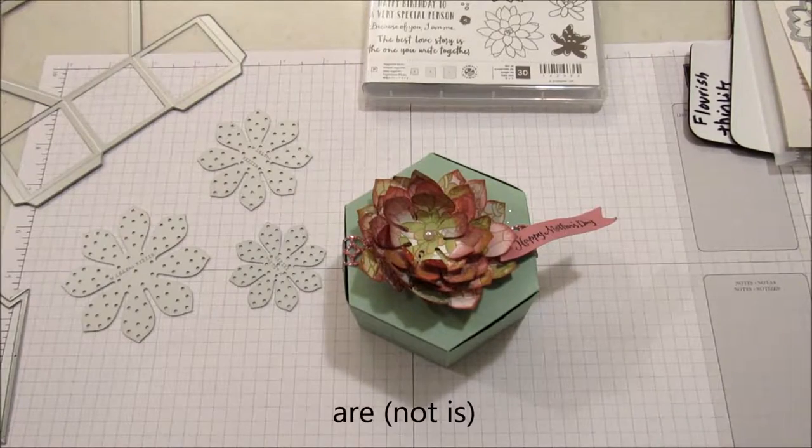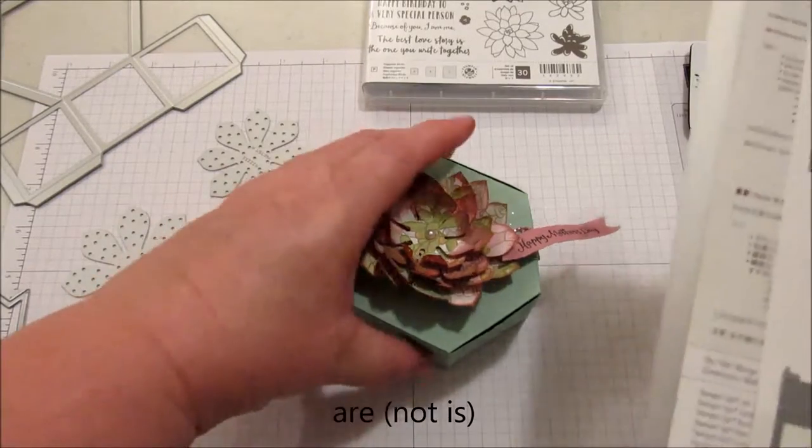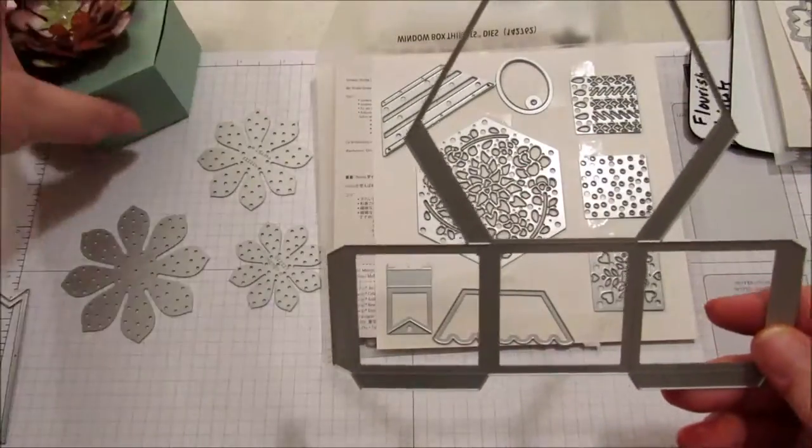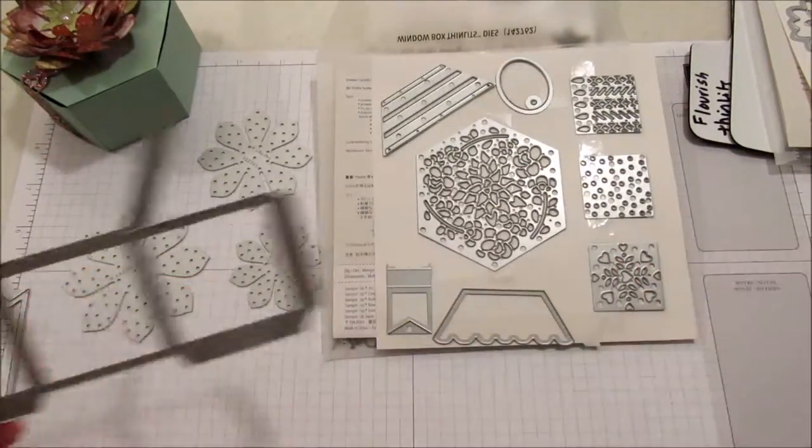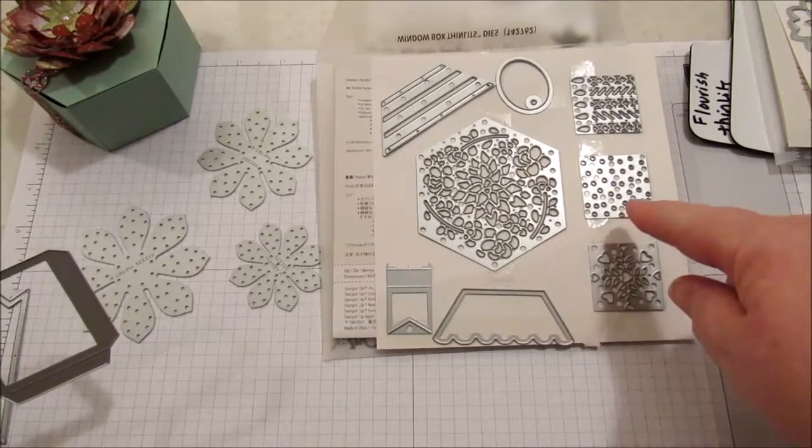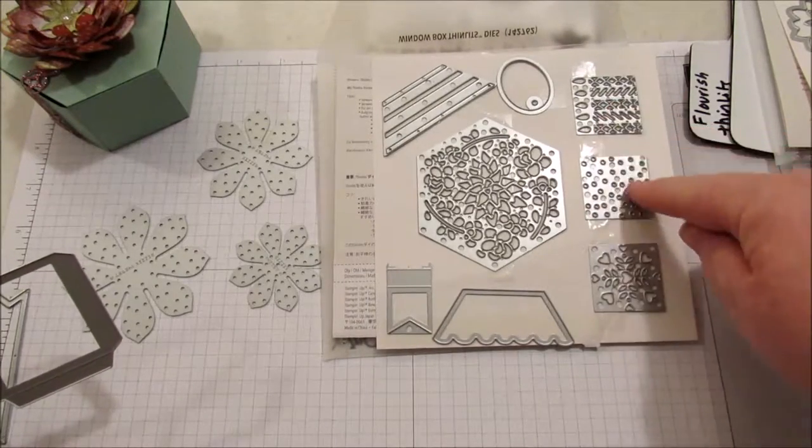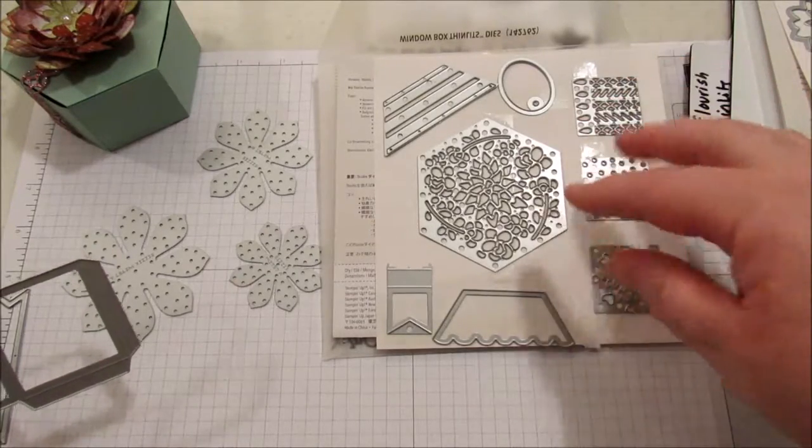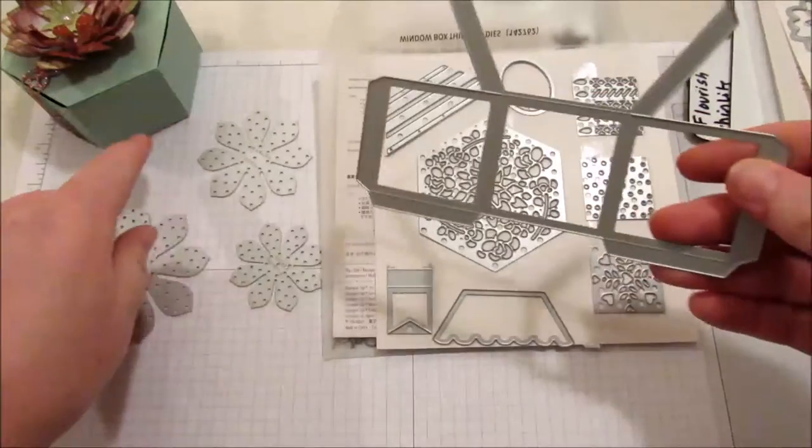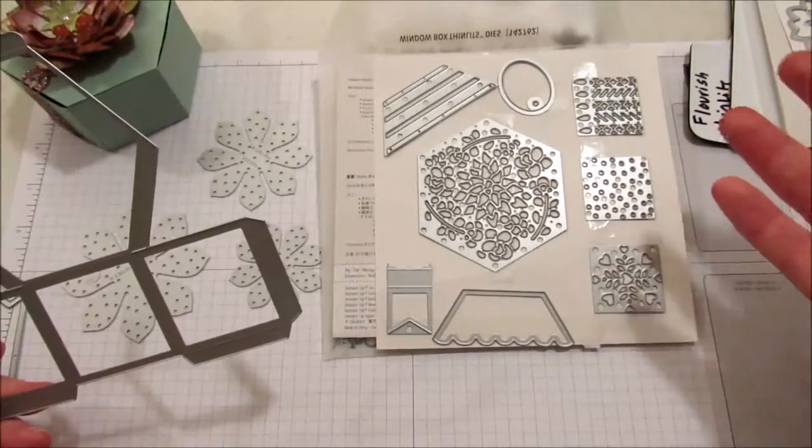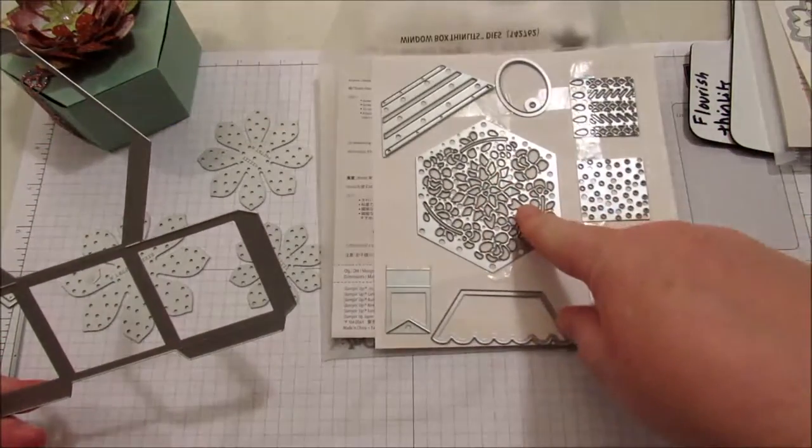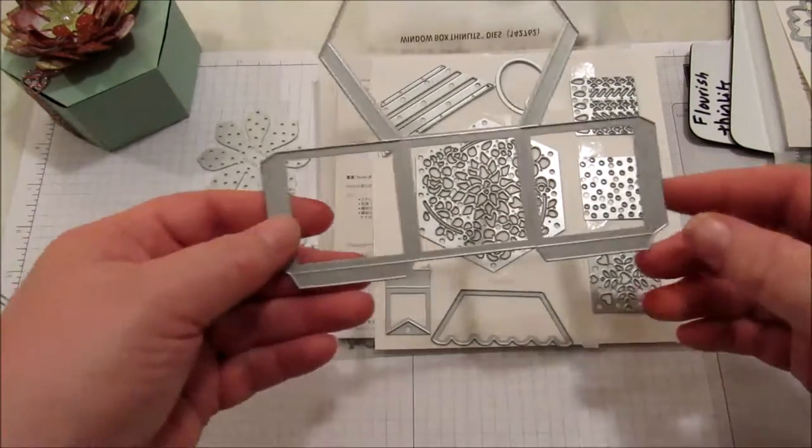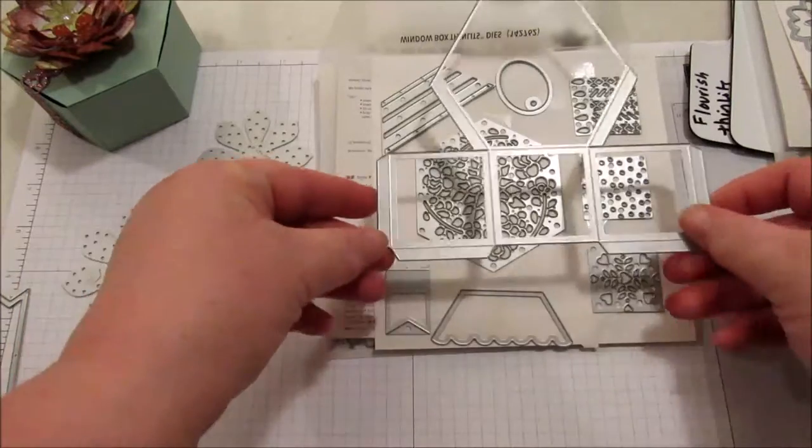The dies I'm using is the window box. Let me move this out of the way for now. The window box dies and I'm using, of course, the box die. And then I just wanted to show that they have other dies. They have these three, the candles, the hearts, and like the bubbles can be placed inside here to make cutouts. So you can make it like a luminary or something. This is for the top. These are to make tags. So there's a lot of things you can do with this. Just on this case, I'm just using this.